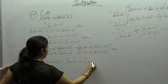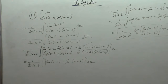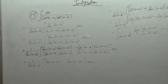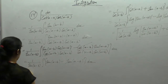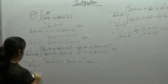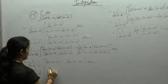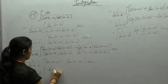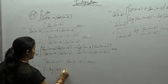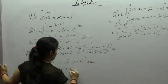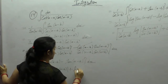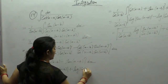The integral of tan(x) is log|sec(x)|, or equivalently minus log|cos(x)|. Applying the formula, we get 1 upon sin(a minus b), times minus log|cos(x minus b)| plus log|cos(x minus a)|.